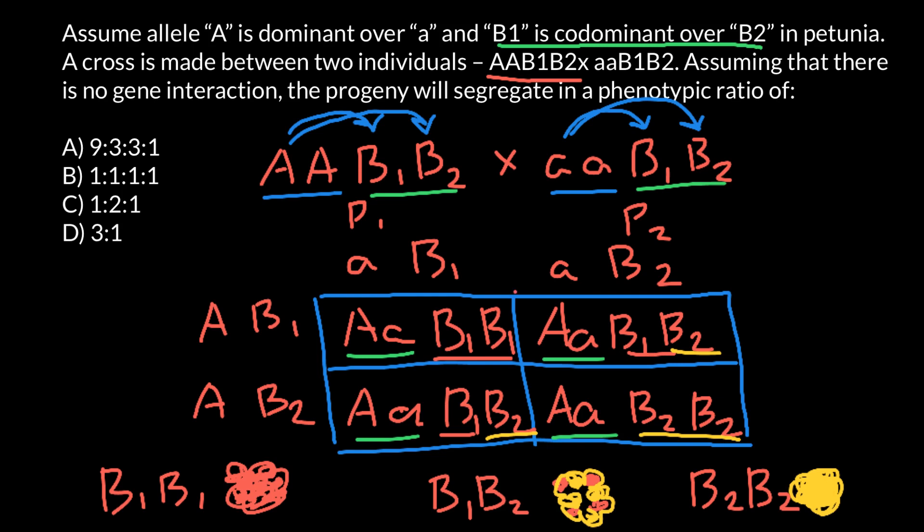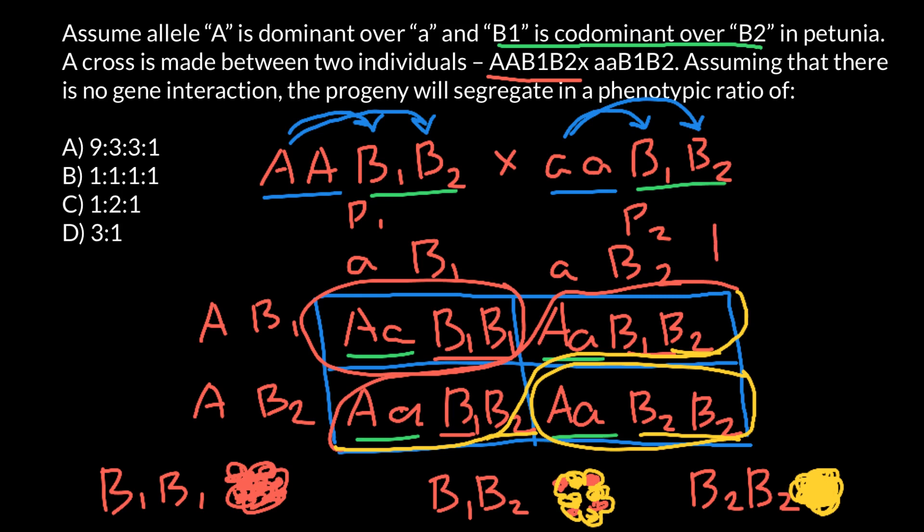So as you see, we are going to get one phenotype here, another phenotype here and here, and here is going to be yet another phenotype where we will have plants that are going to be tall, and flowers going to be patches of red and yellow. And ratio would be 1 to 2 to 1. So the correct answer is answer C.